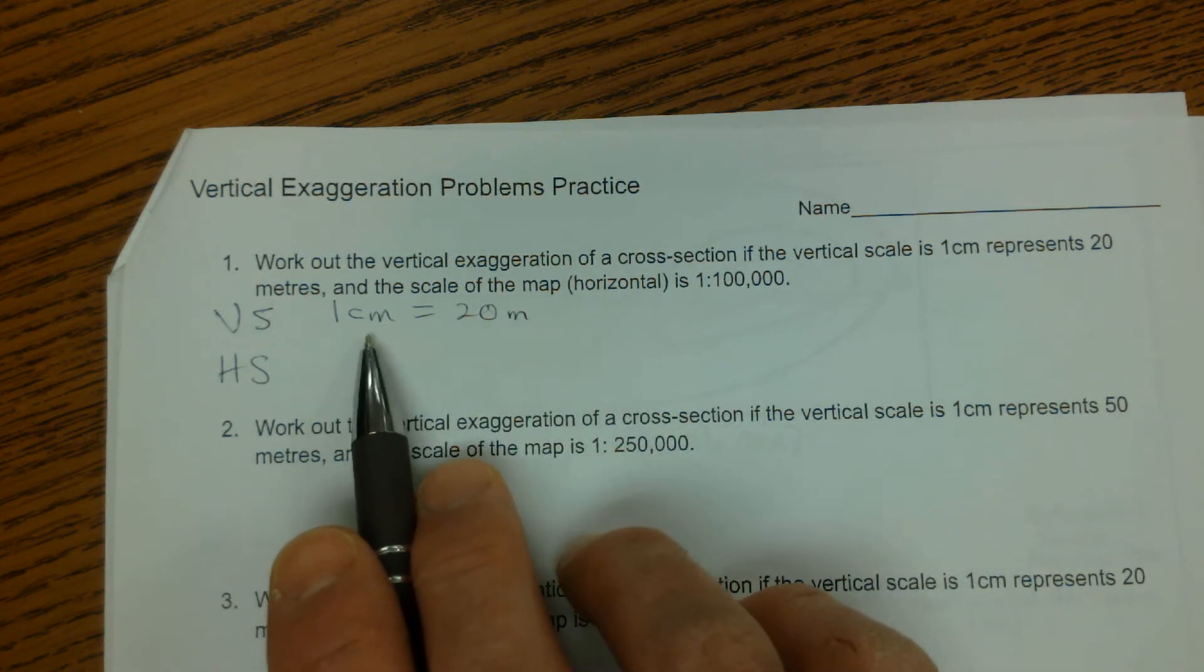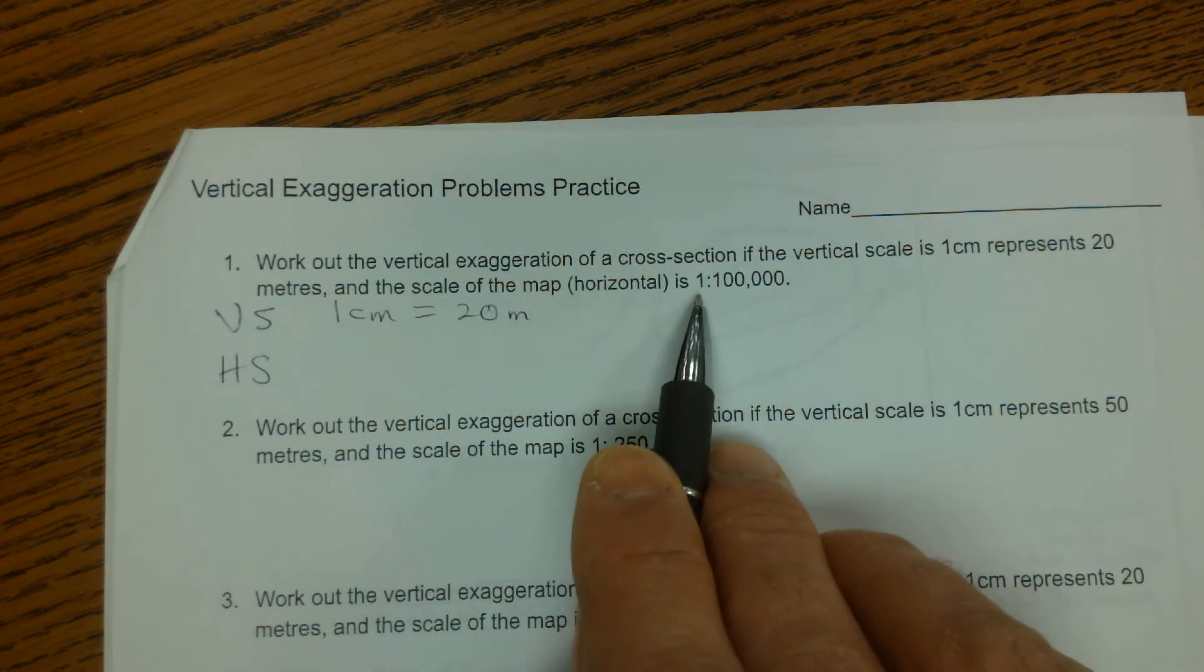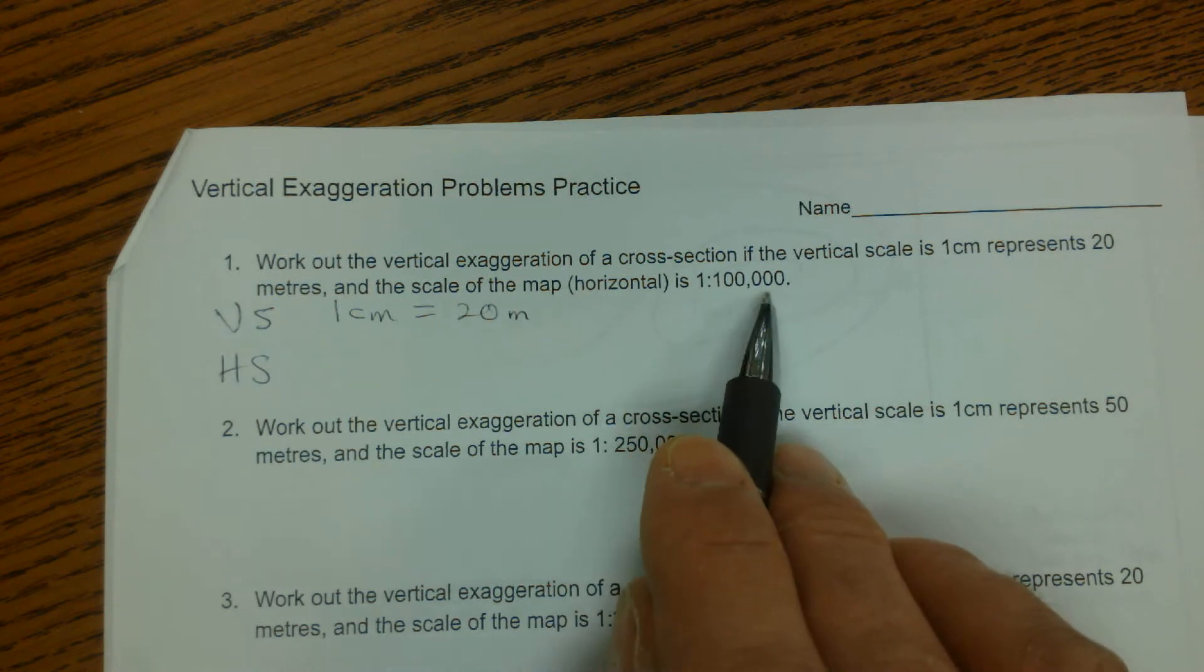But you can't do something like this scale where 1 centimeter represents 20 meters. So you can say 1 centimeter represents 100,000 meters. That's a big no-no.